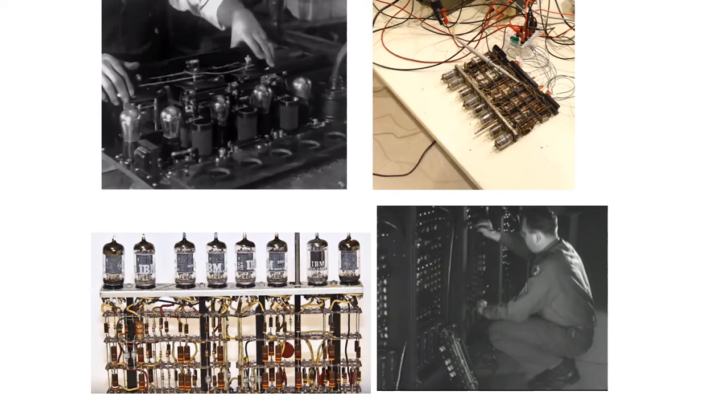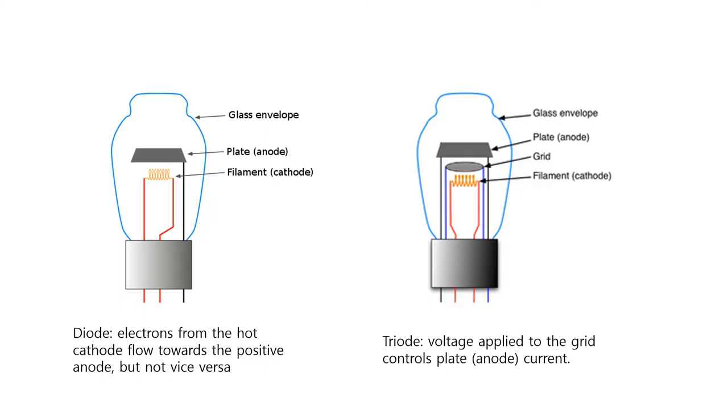Vacuum tubes were invented during 1910 and were a basic component of electronics throughout the first half of the century, which saw the diffusion of radio, television, radar, sound reinforcement, sound recording and reproduction, large telephone networks, and analog and digital computers as well as industrial process control systems. Here in this picture is displayed the schematic diagram of a diode and a triode. In a diode, the electrons from the hot cathode flow towards the positive anode but not vice versa. In a triode, a grid is introduced between the plate and the filament, and the voltage applied to the grid controls the plate current or the anodic current.